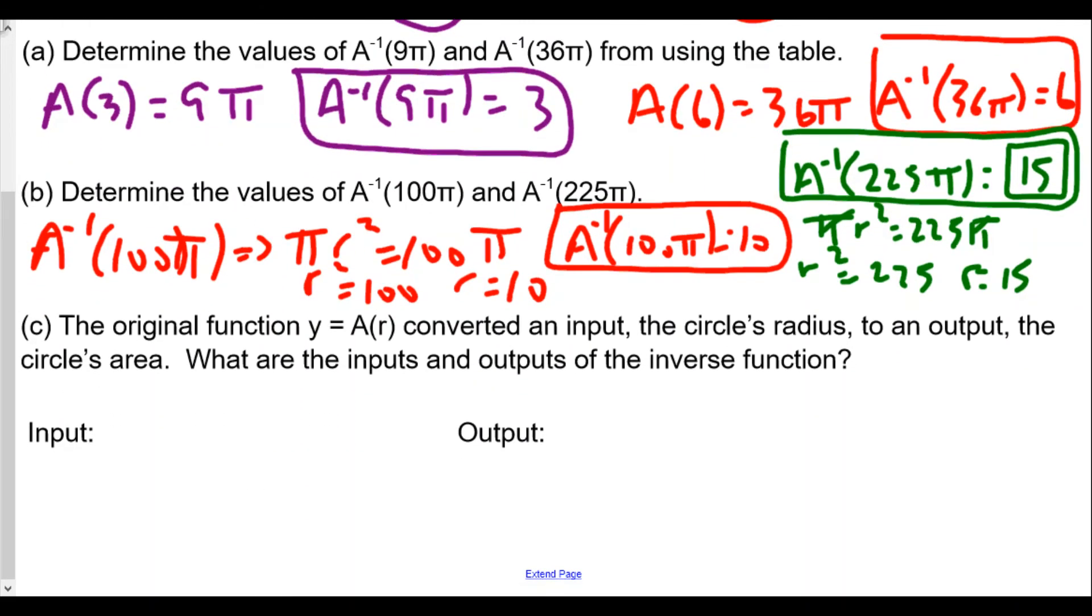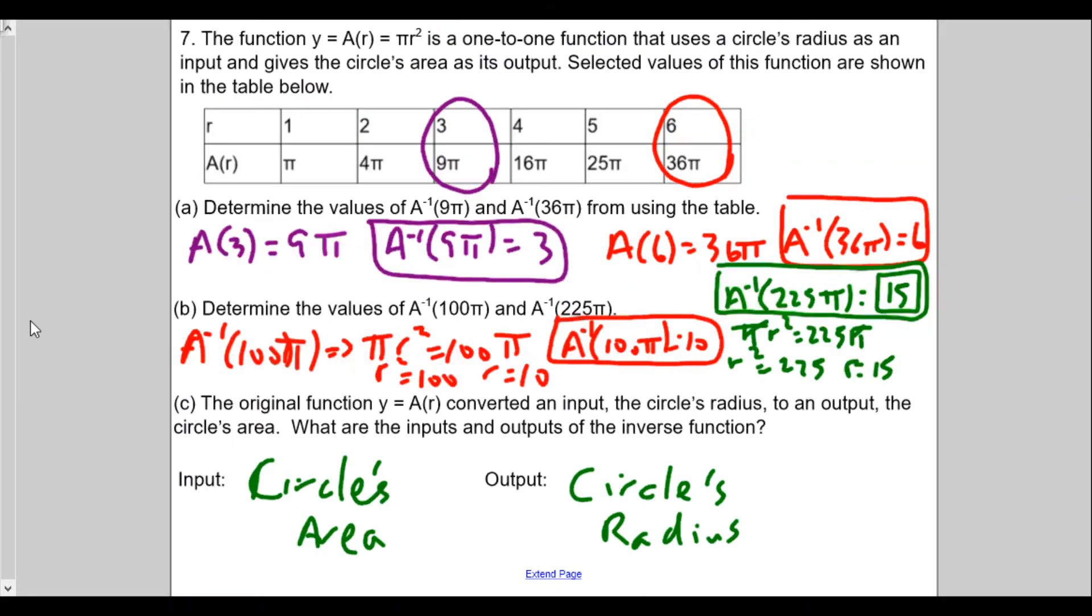And then, the original function y = A(r) converts an input, the circle's radius, to an output, the circle's area. What are the inputs and outputs of the inverse? Well, the input would be the circle's area and the output would be the circle's radius. That's why we definitely have apostrophe because of possession. They kind of switched places. That's how it works out.